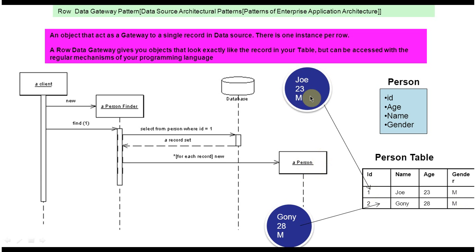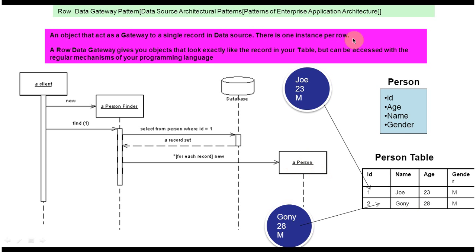In this case, we are accessing the first row, so the person object will look like: Joe, 23, male. And suppose if you are finding the second row, then 'SELECT * FROM person WHERE id = 2' will return the record set containing the second row information, and for this row we create a new person object containing Goni's information. As a summary: it's an object that acts as a gateway to a single record in a data source, with one instance per row. This is about the Row Data Gateway pattern. Thanks for watching.